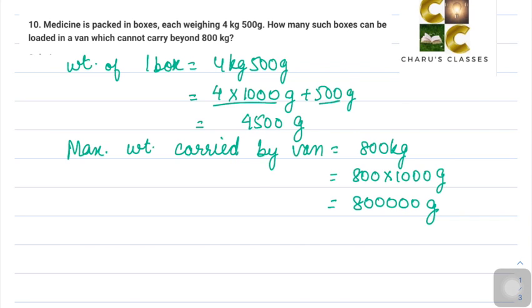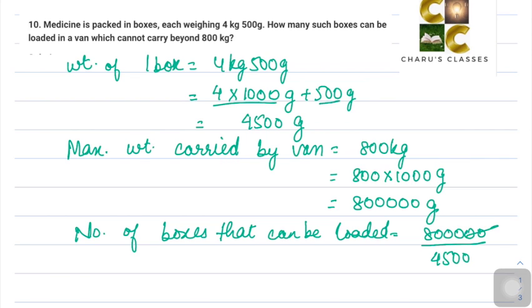Now they are asking the number of boxes which can be loaded in the van, so we have to divide this 800,000 by 4500. These two zeros cancel, and 5 nines are 45, and 5 sixteens are 80. So basically we have to divide 1600 by 9. 9 ones are 9, we have 70. 9 sevens are 63, again 70, sevens are 63, and we are getting a remainder of 7.